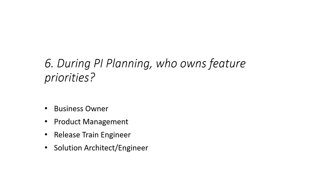During PI planning, who owns feature priorities? The options are: business owner, product management, release train engineer, or solution architect/engineer. Just as in sprint planning we have a product owner who owns priorities for a sprint, during PI planning there can be more than one product owner, so it is mainly product management who owns feature priorities. The right answer is product management.